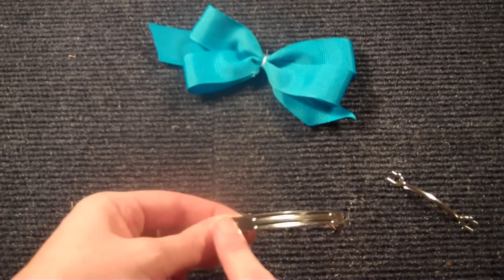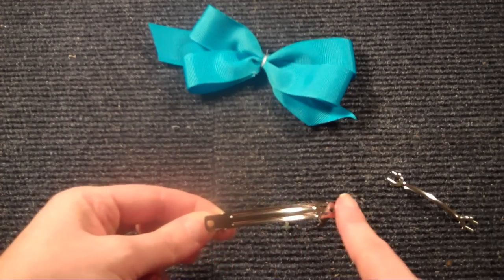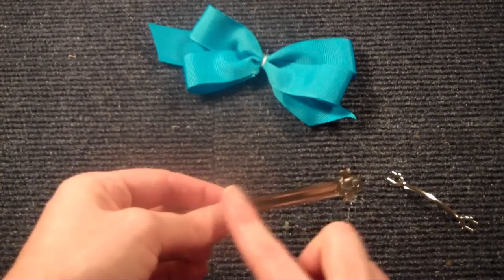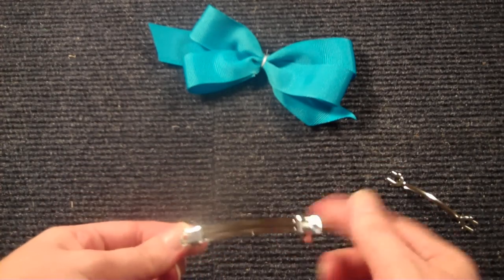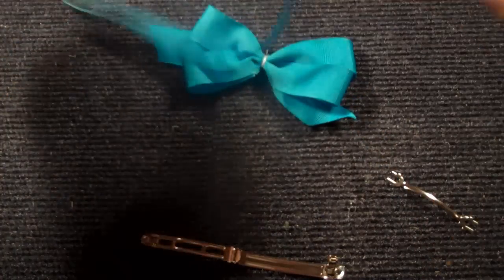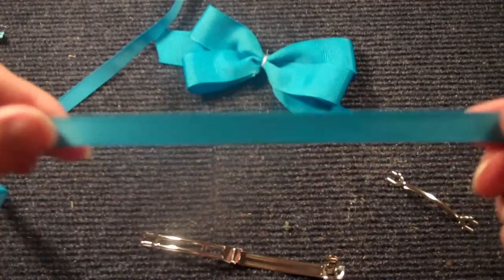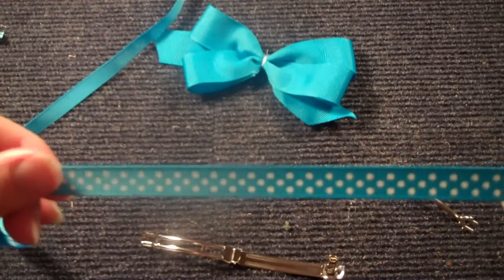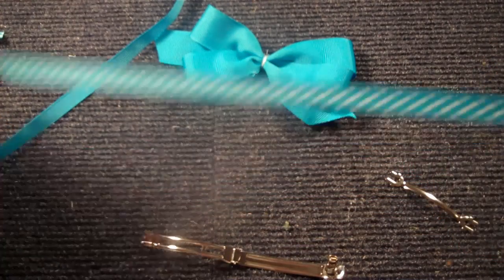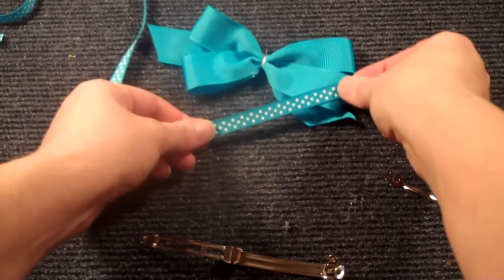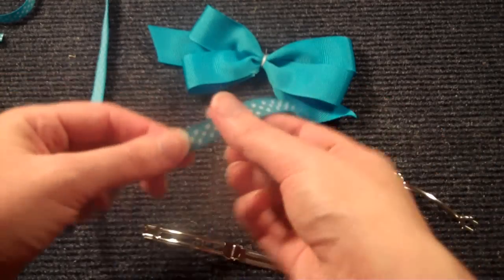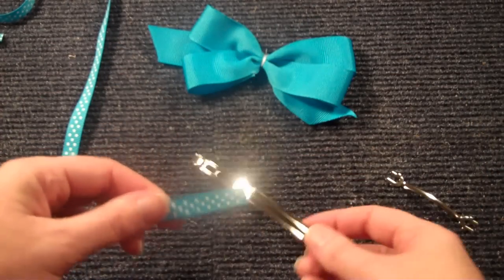We're going to be attaching 3/8 inch ribbon here and underneath here, just to give it a more finished look. I'm going to be using this Swiss Dot 3/8 inch ribbon. It's the same color as the bow, but the Swiss Dot is a little bit different, so that's how we're going to finish this one off.